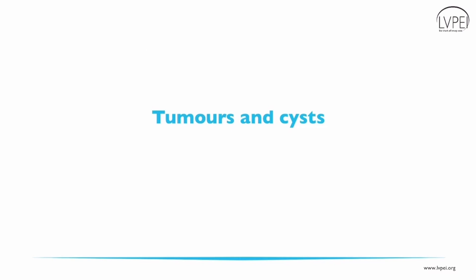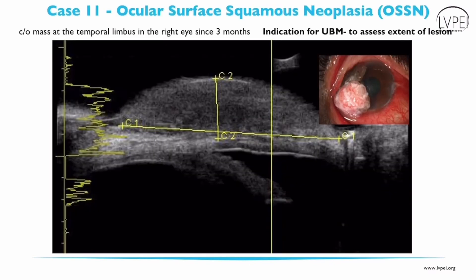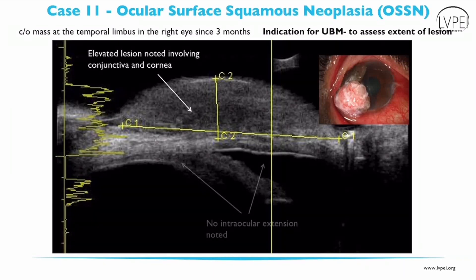UBM has clinical application in cases with tumours as well as cysts. It plays a very important role in ocular surface squamous neoplasia, helping in assessing the depth of the tumour, studying the layer of origin of the tumour, and planning the treatment. This patient presented with a mass in the temporal limbus of the right eye for 3 months. UBM clearly showed that the lesion is involving the conjunctiva and cornea with no intraocular extension present.